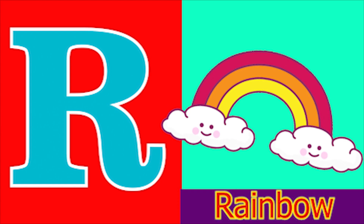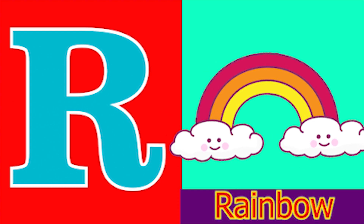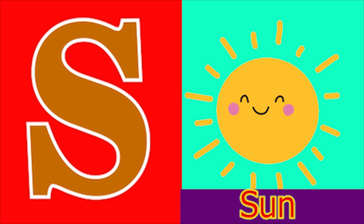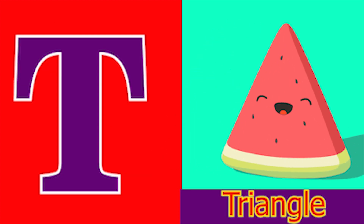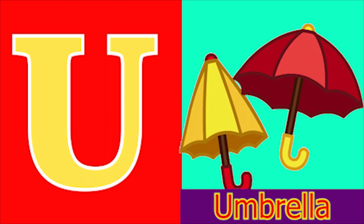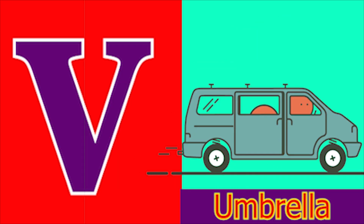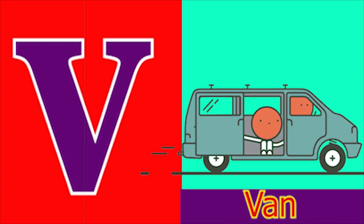R for rainbow, S for sun, D for triangle, U for umbrella, V for fan.